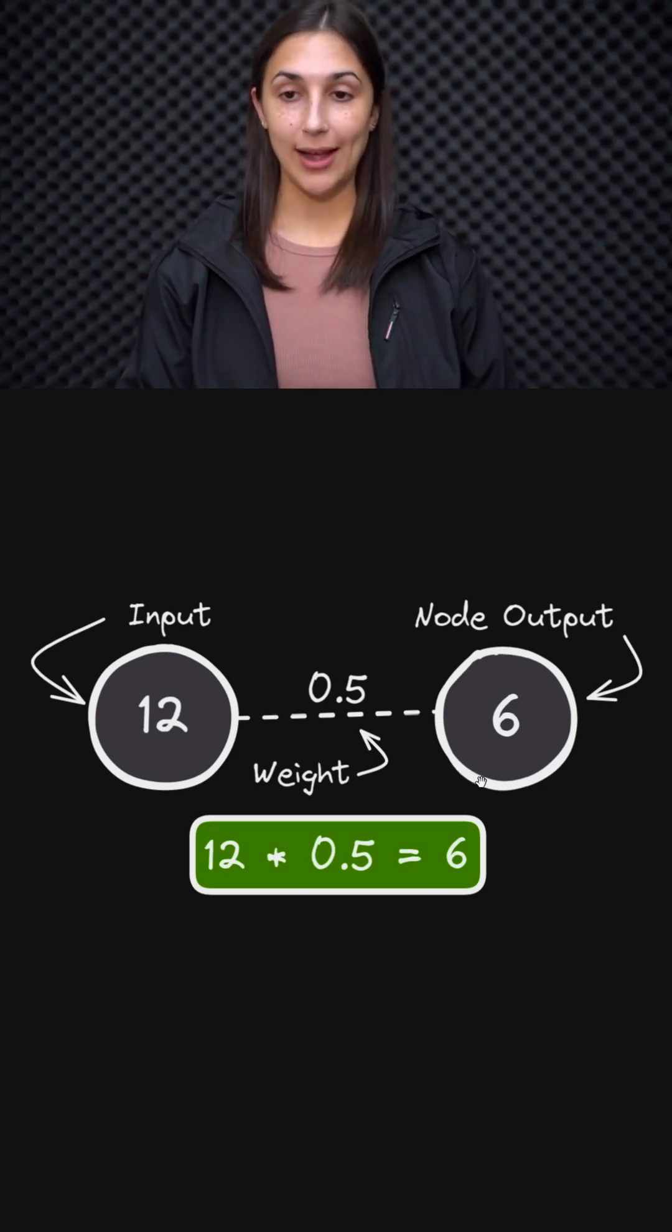And this is the pre-activation output, of course. So we have the output value 6 here, but this is assuming that we've not yet passed it to any activation function.